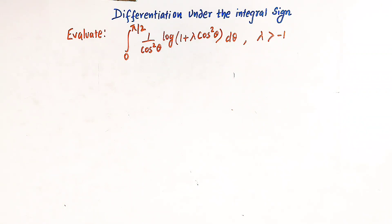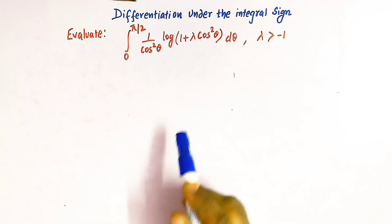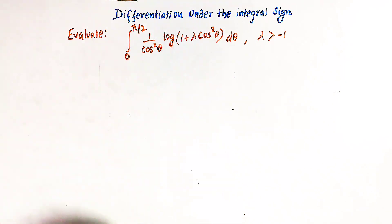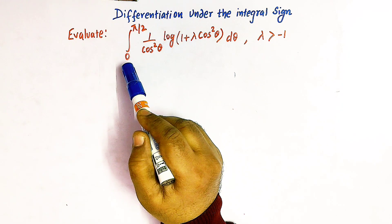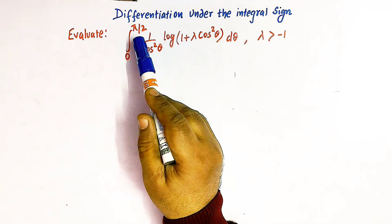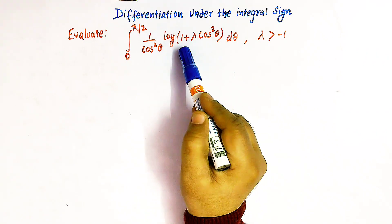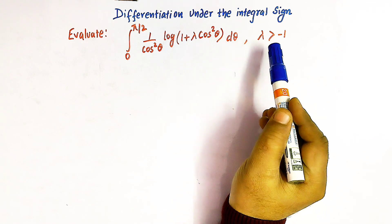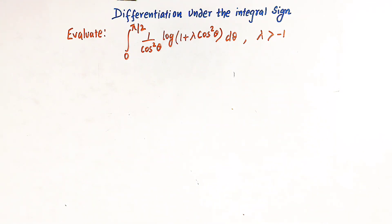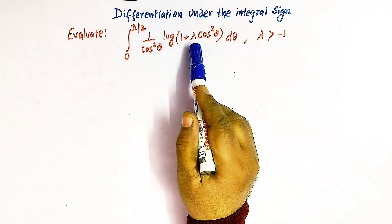Hello viewers. In today's class we are going to discuss an important problem from differentiation under the integral sign. In this session we'll solve this integral using the concept of differentiation under the integral sign. We have the integral from 0 to π/2 of (1/cos²θ)·log(1 + λcos²θ) dθ, where λ > −1. We'll solve this problem taking λ as a parameter.